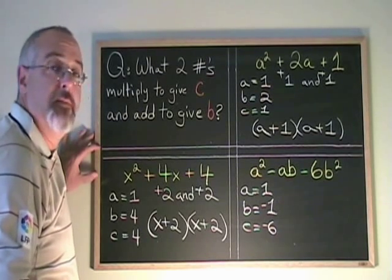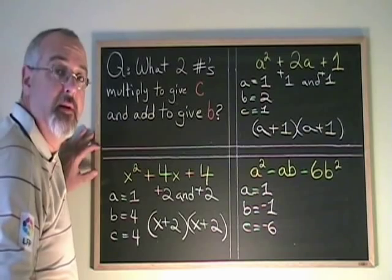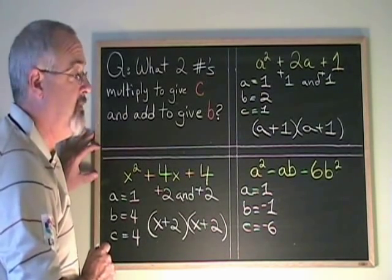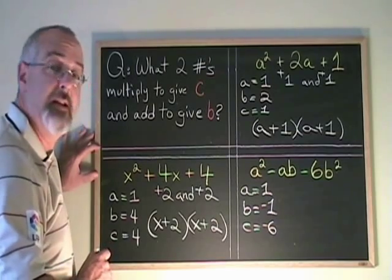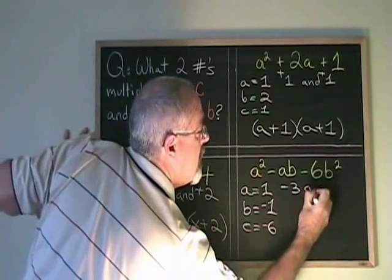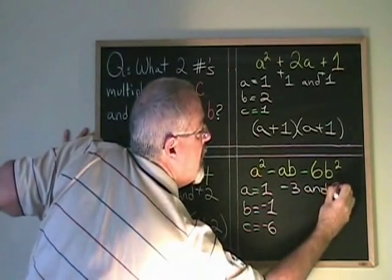What two numbers multiply to give negative 6 and add to give negative 1? Figuring out the factors both positive and negative of a number is part of the process, but with practice this becomes easier. The two numbers that multiply to give negative 6 and add to give negative 1 are negative 3 and 2.